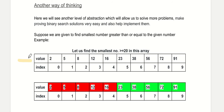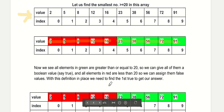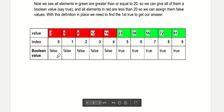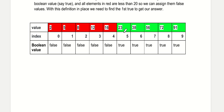We have been given the same sorted array as before and now we have to find the smallest number greater than or equal to 20. We can think that binary search can be applied. The key insight is that elements 23 to 91 are greater than or equal to 20, and elements 2 to 16 are less than 20. We can assign a boolean value: false to elements from 2 to 16, and true to elements from 23 to 91.